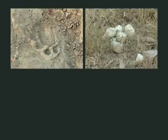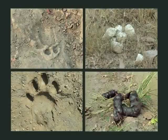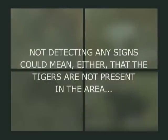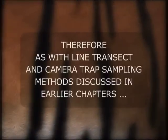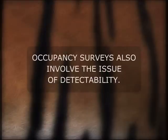Please note that it is possible that some signs present in a cell may go undetected. Not detecting any signs could mean either that tigers are not present in the area, or that they are there but were not detected during the survey. Therefore, as with line transect and camera trap sampling methods discussed in earlier chapters, occupancy surveys also involve the issue of detectability.